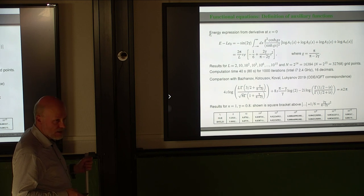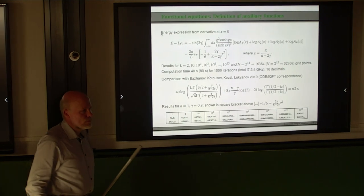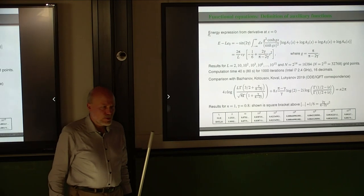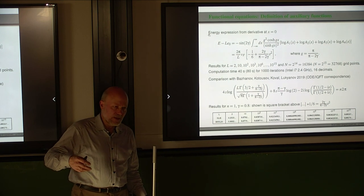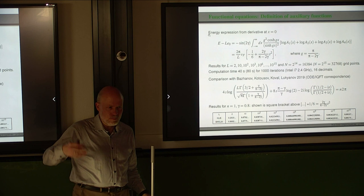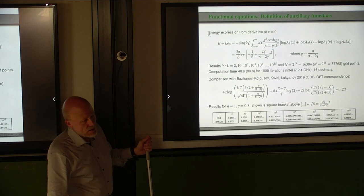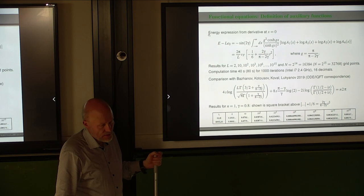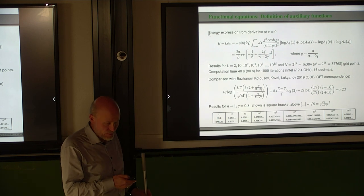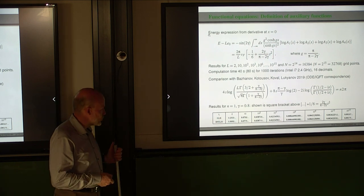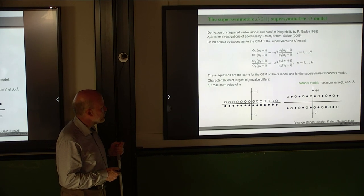A question was raised about the magnitude of terms neglected when expanding the kernel for large separation. We did only the basic calculations so far — then we were attracted to another problem. The problem I am not allowed to show due to time limitations is the SL(2|1) supersymmetric three-bar model.